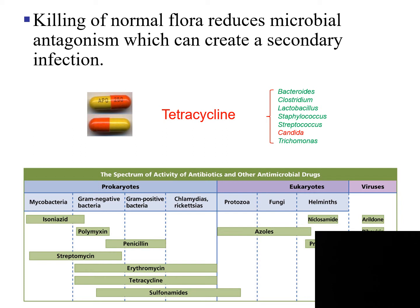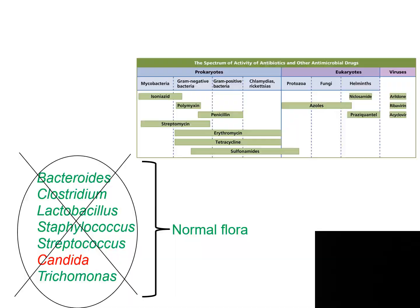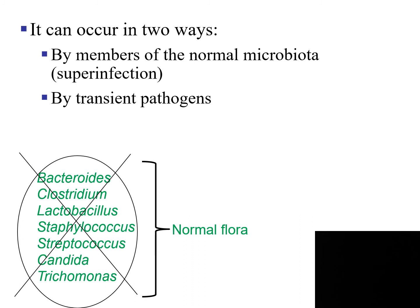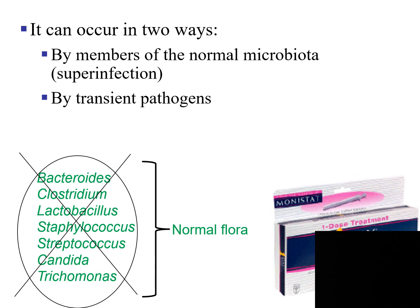How is broad spectrum versus narrow spectrum relevant? When you kill the normal bacterial flora that you naturally have, you're going to reduce the microbial antagonist, which can lead to a secondary infection. Some of these bacteria work against each other, and if you kill the antagonist, the other one can mass produce — this is called a secondary infection. A secondary infection is one that compounds a pre-existing one. This secondary infection can occur in two ways: by members of the normal microbiota or by transient pathogens.